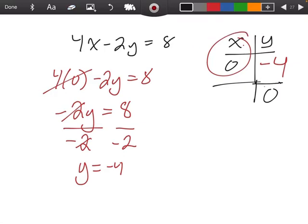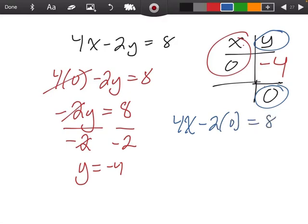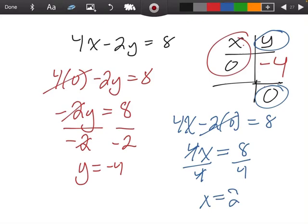Then I'm going to do this problem all over again. And now what we're going to do is everywhere we have a y, we're going to plug in a 0. So I'm going to write out 4x minus 2 times 0 equals 8. Remember, 2 times 0 is just 0. So that's going to leave me with 4x is equal to 8. So when we divide by 4 on both sides, we're coming up with x is equal to 2. So x equals 2.